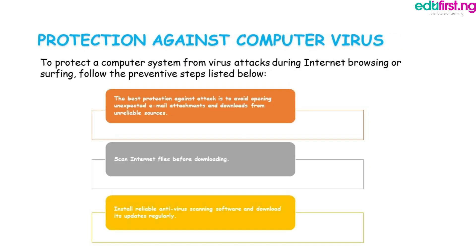Protection against computer virus: to protect a computer system from virus attacks during internet browsing or surfing, follow these preventive steps. First, the best protection is to avoid opening unexpected email attachments and downloads from unreliable sources. Second, scan internet files before downloading. Third, install reliable antivirus scanning software and download its updates regularly.